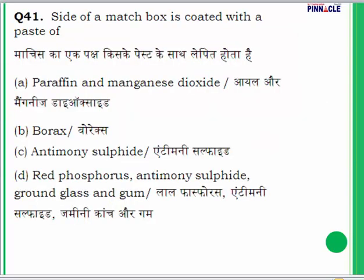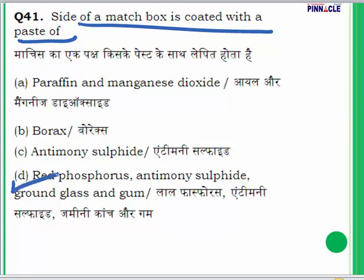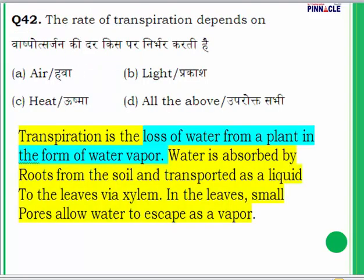Question 41: The sides of a matchbox are coated with a paste of what? The answer is D — they are coated with red phosphorus, antimony sulfide, and ground glass and gum.